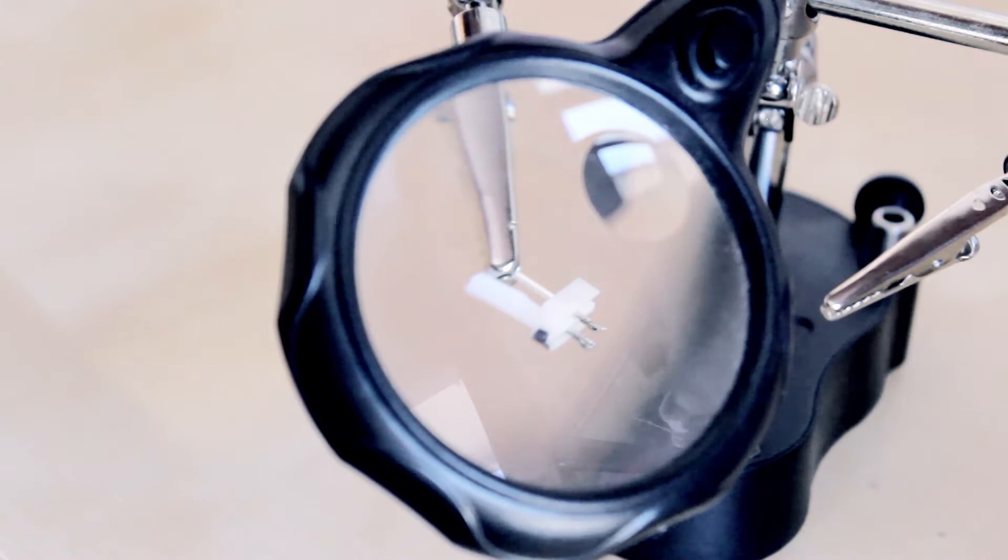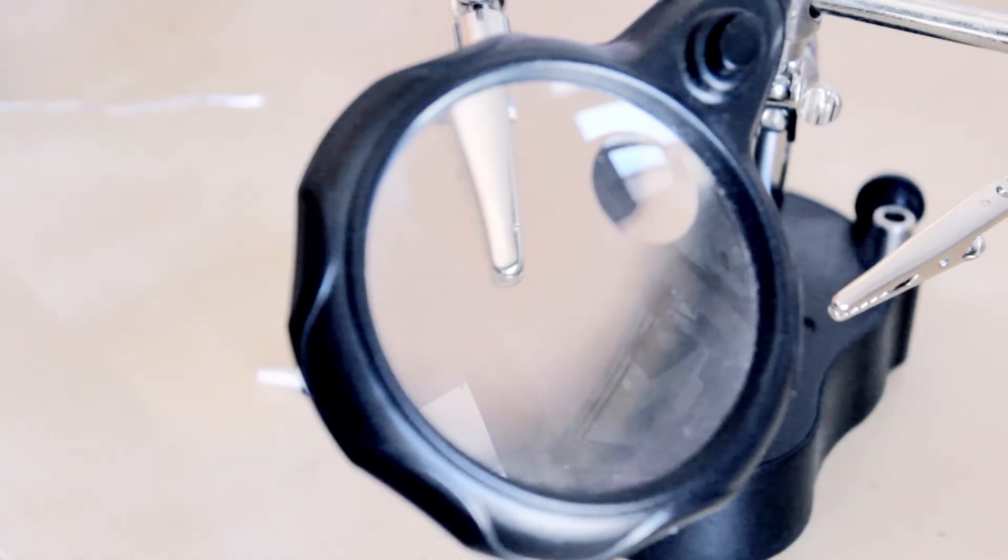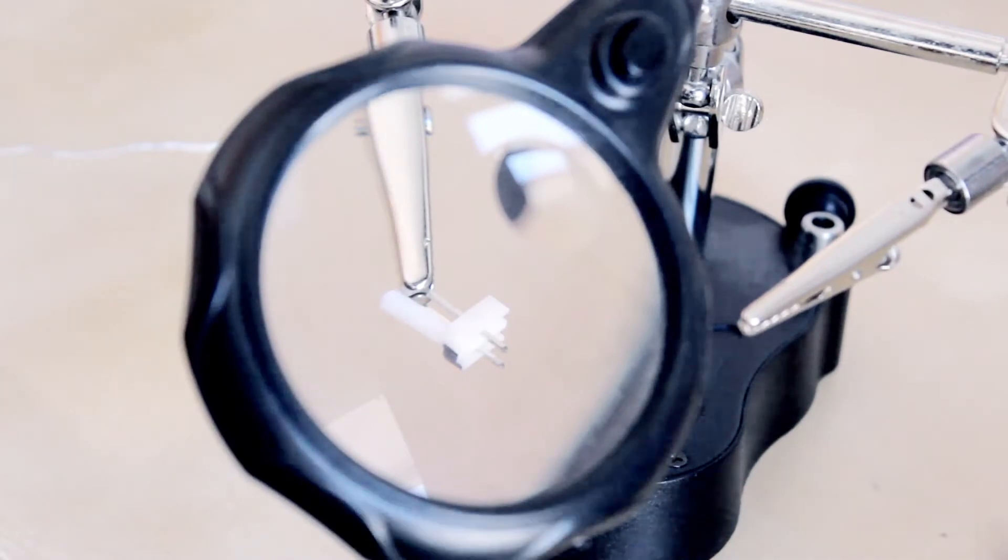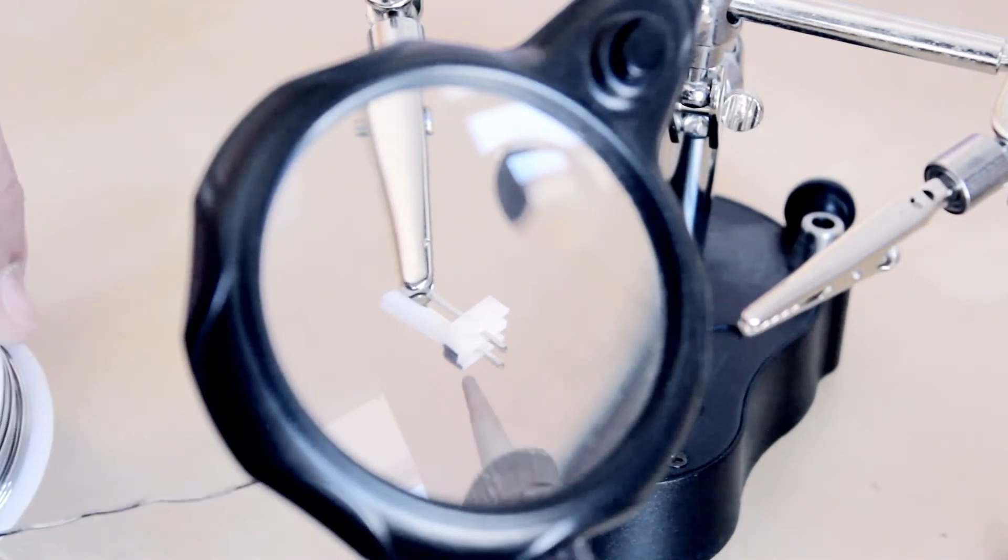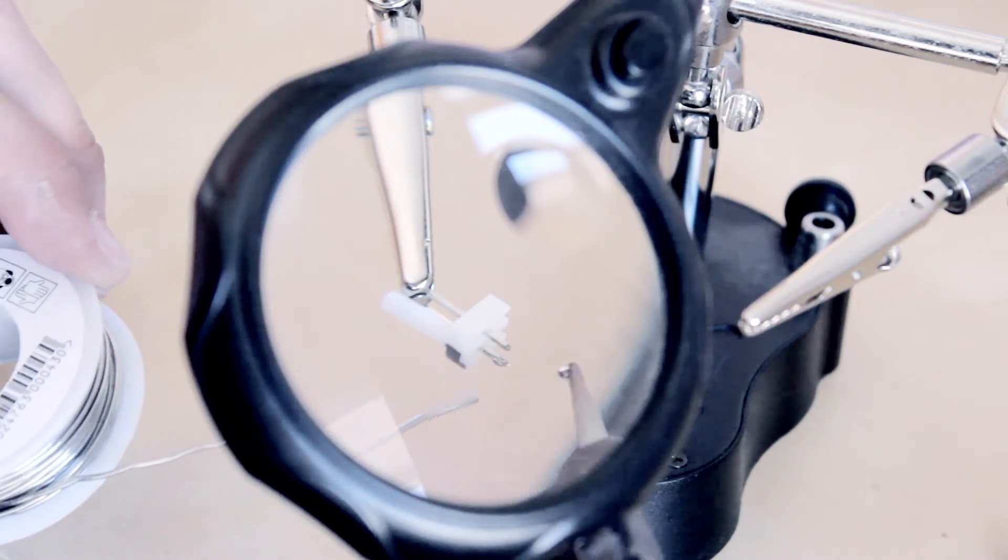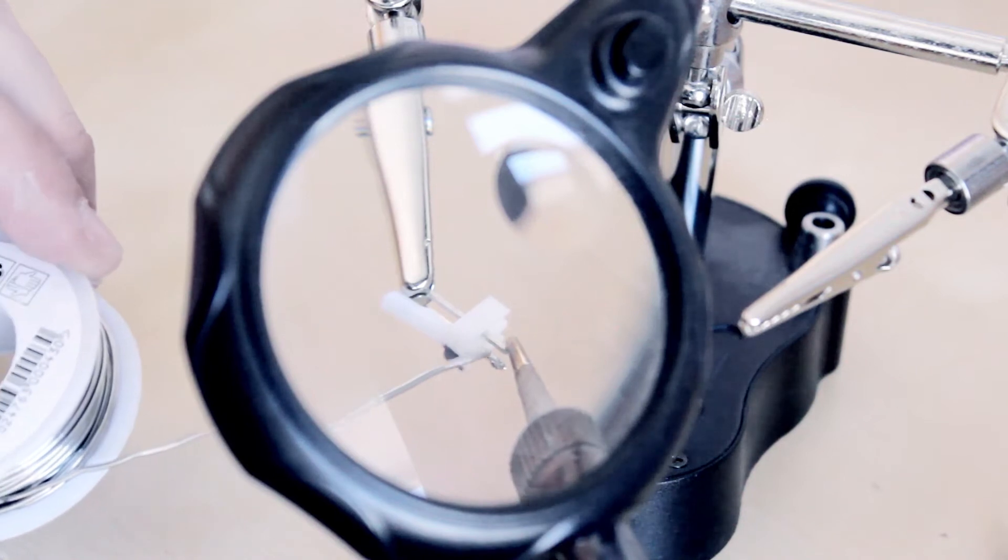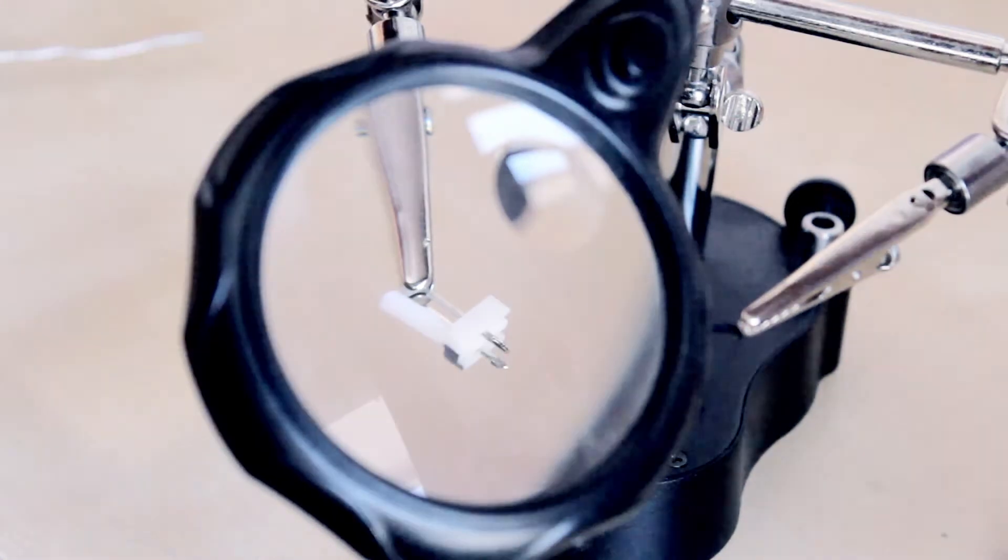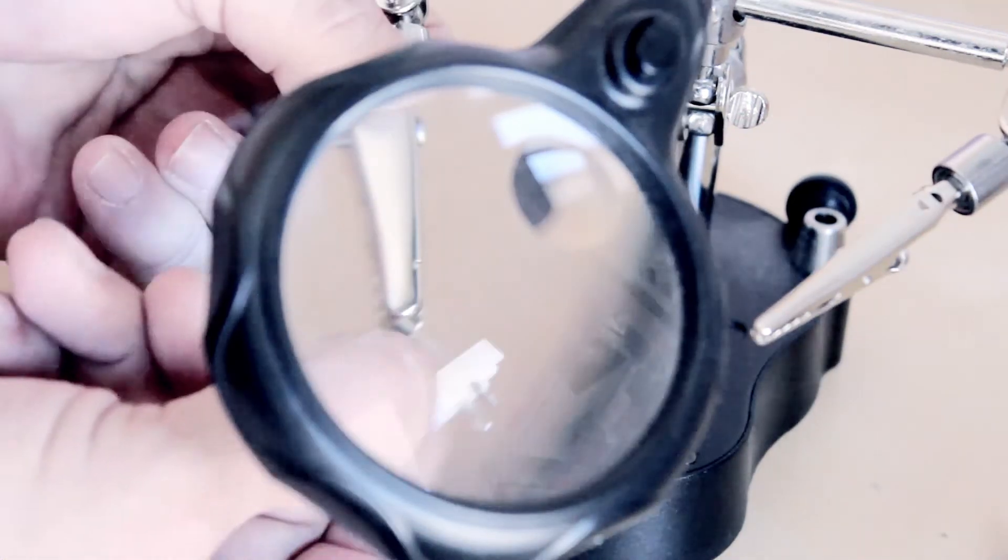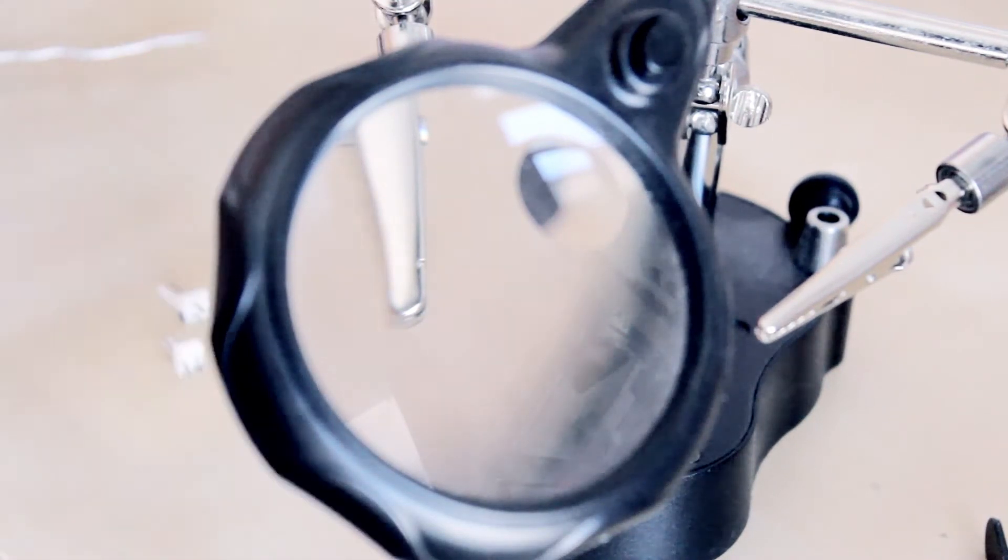Then we get the other and we repeat again the same process. Iron, then some. Clean and repeat again. Perfect. Now we have the two male parts ready, we will do the same on the wires.